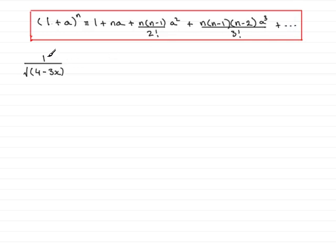I'm going to modify this first of all so that we aim to get it into this format. Well, 4 minus 3x, square rooted, is 4 minus 3x to the power half, and then if I bring it up to the top, this becomes 4 minus 3x to the power minus a half.